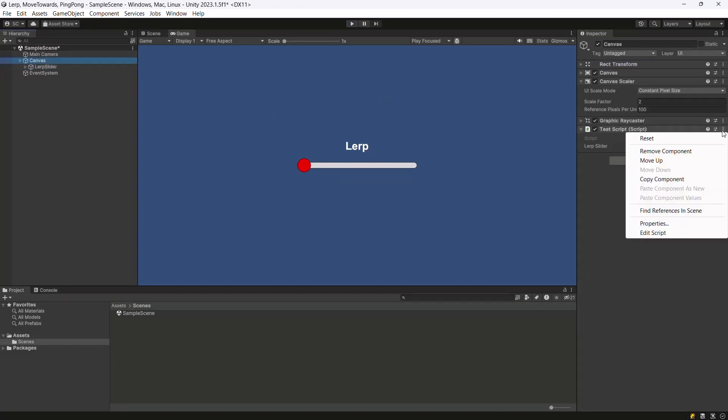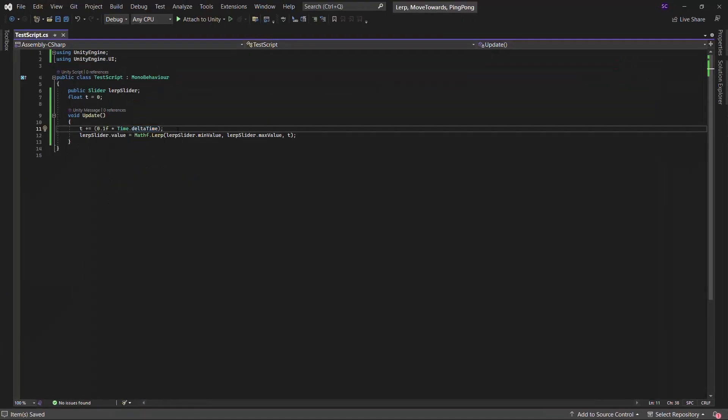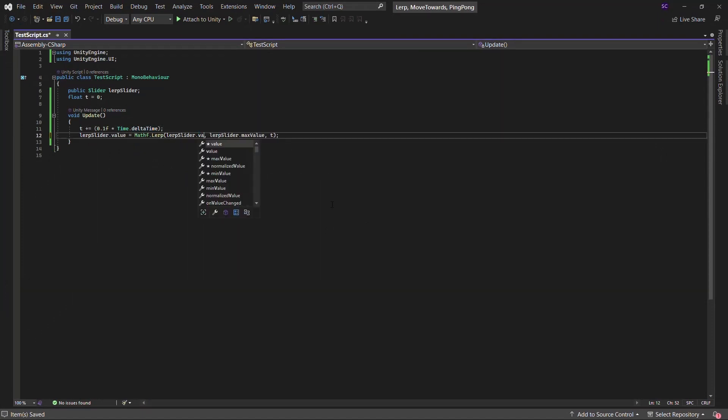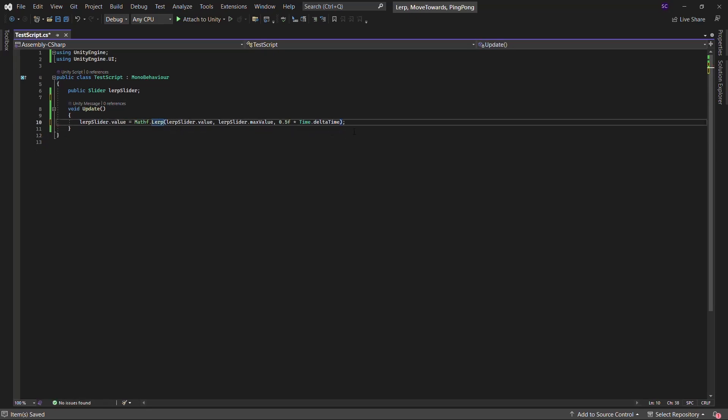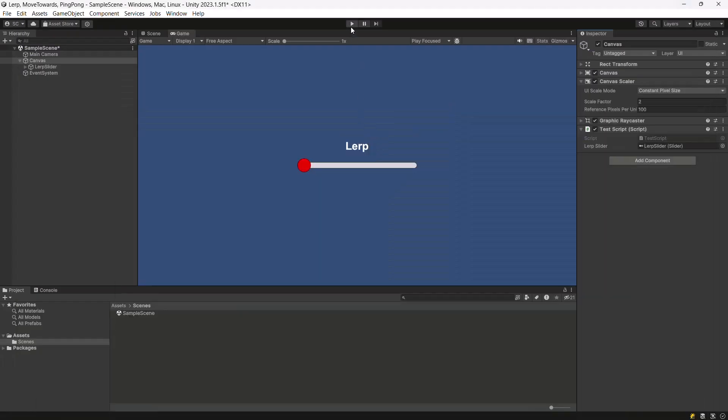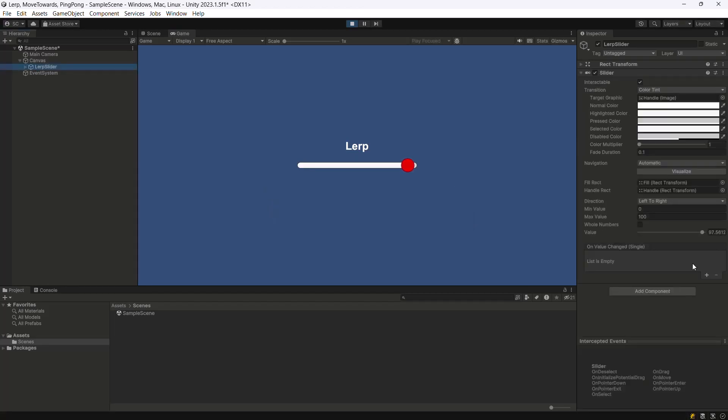There is one more popular way of using Lerp. Replace the min value with the current value, which is getting updated on every frame. Fix the value of T to 0.5 per second. This way, after every second, the handle will cover half of the remaining distance. Play the scene, and you will notice that the speed is decreasing with the passing of time.